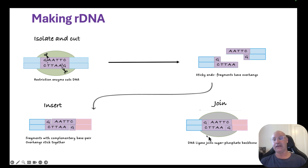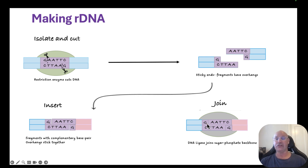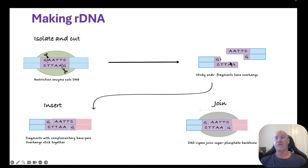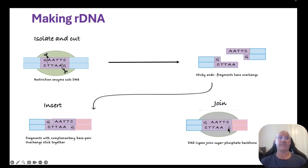Finally, we join it together using DNA ligase. We've got hydrogen bonds between the complementary base pairs, and what the DNA ligase does is glue together the sugar-phosphate backbone. So to recap: we isolate and cut using the restriction enzyme at a specific location, which provides sticky ends with overhanging nucleotides. We insert it into the plasmid where it lines up with the complementary base pairs, and then DNA ligase joins together the sugar-phosphate backbone.